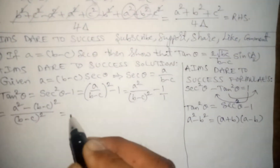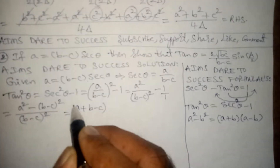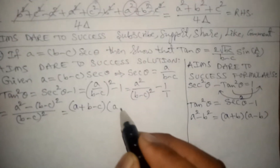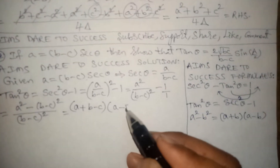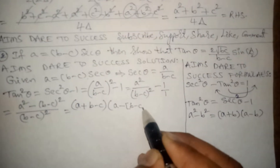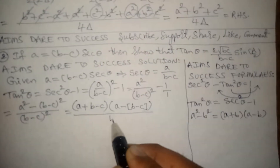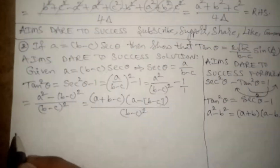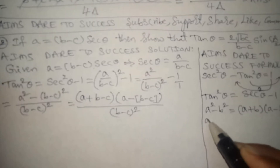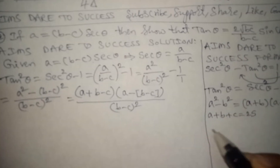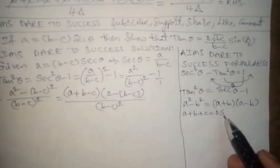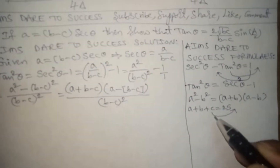Here a is just a and b is (b minus c). So we write the first bracket as (a plus (b minus c)) and the second bracket as (a minus (b minus c)), all divided by (b minus c) squared. Using the standard formula a plus b plus c equals 2s, we get a plus b equals 2s minus c.